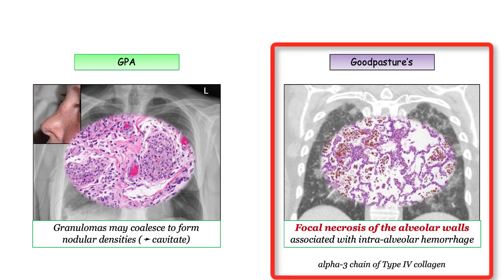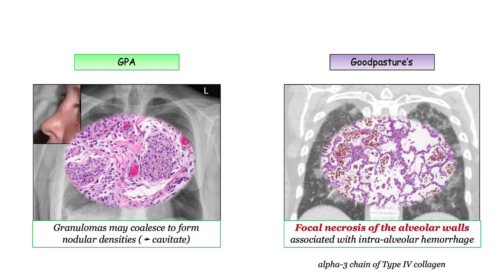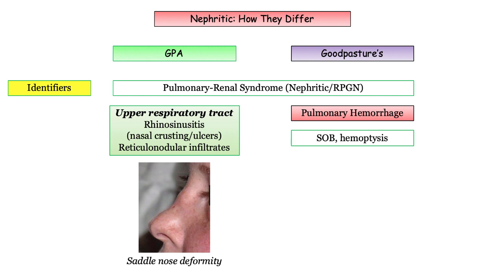Turning to Goodpasture's: the disorder is characterized by an autoimmune attack against type 4 collagen, found in the alveolar and glomerular basement membranes. This is not a granulomatous disorder and would not be associated with nodules or upper tract involvement. To summarize: pulmonary hemorrhage alone in Goodpasture's versus extra-alveolar findings in GPA.